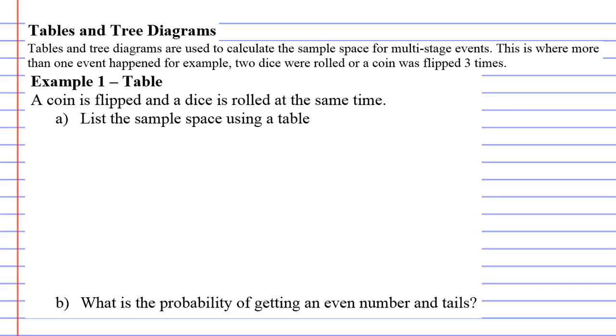For example, rolling two dice rather than one, or flipping a coin three times rather than just flipping it once. So in example one, we're going to do a table, and then example two will be a tree diagram.